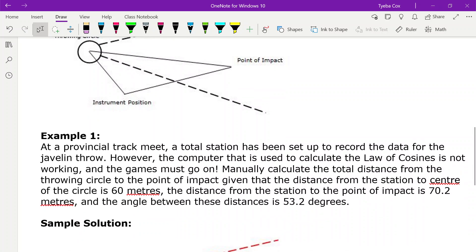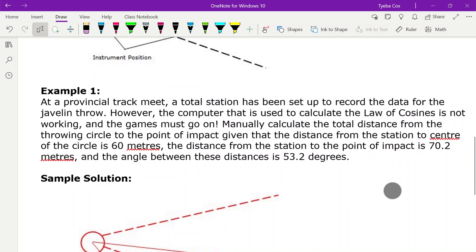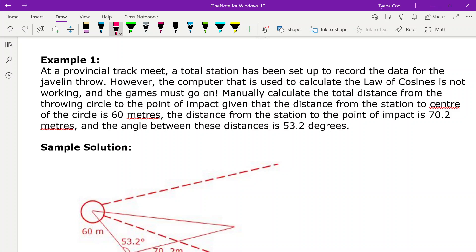Now, our example here says at a provincial track meet, a total station has been set up to record the data for the javelin throw. However, the computer that is used to calculate the law of cosines is not working and the games must go on.